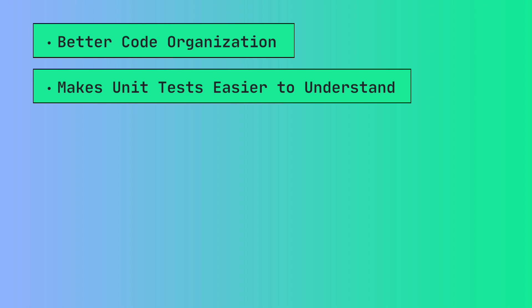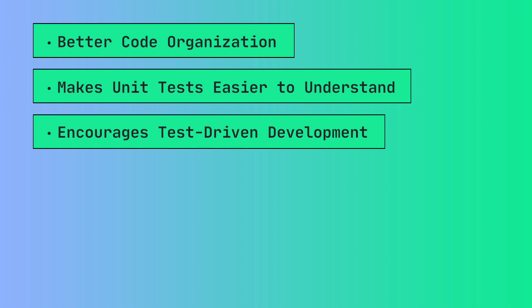TDD support. The AAA pattern encourages you to use TDD — it gives you the steps and the structure to set up a test of expected results without the code actually being there to produce it. So it goes hand in hand with the methodology you need to create a test for TDD.